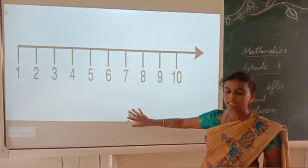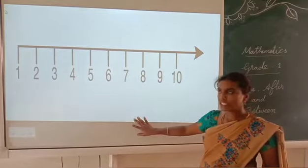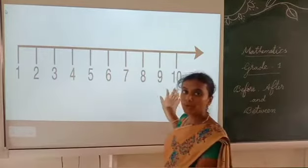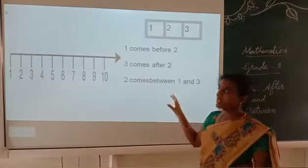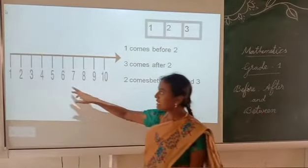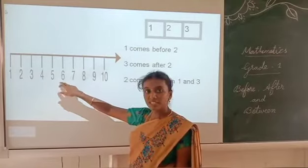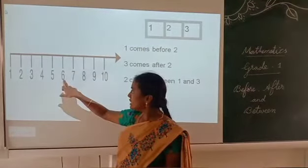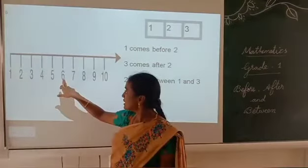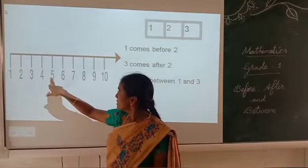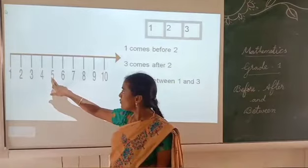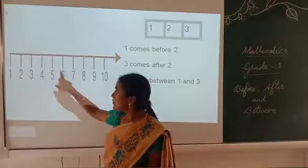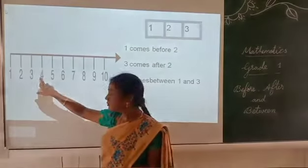This is a number line. Here I have given the number line from 1 to 10. We can easily see the position of the numbers. Look at number 5 — 5 comes after 4.